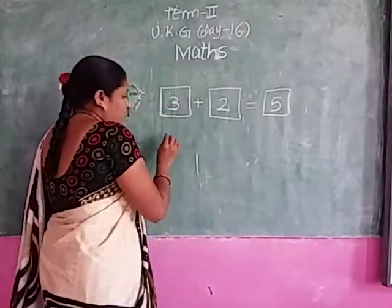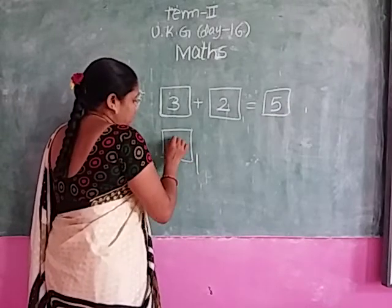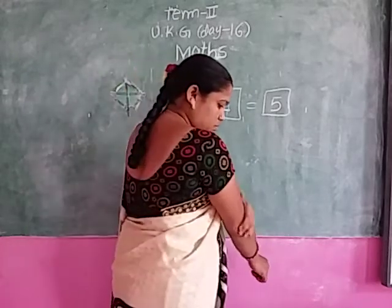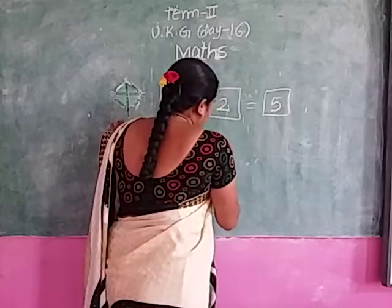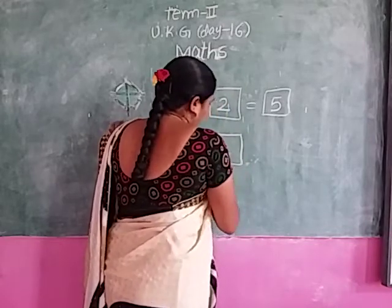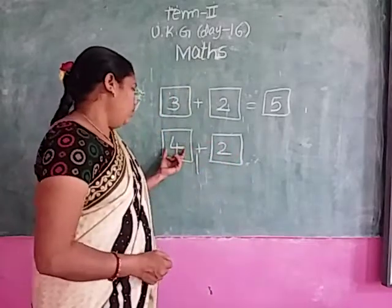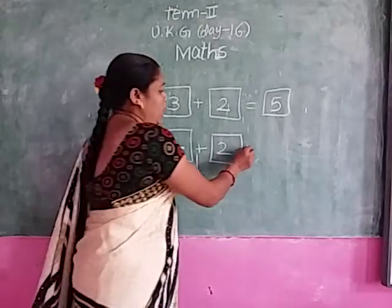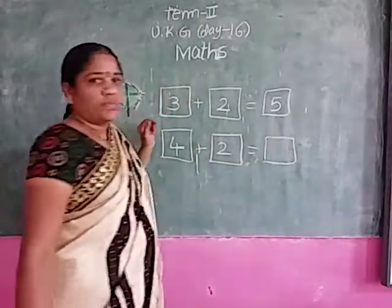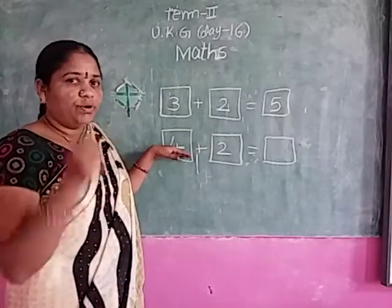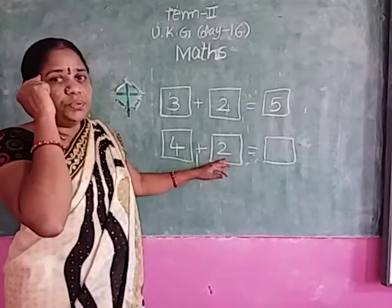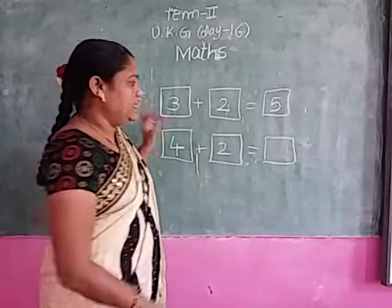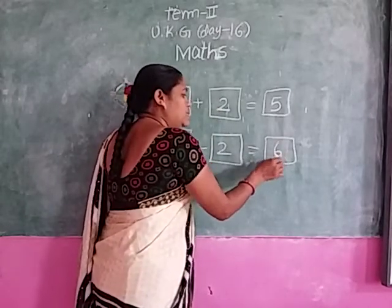I have 4 balloons. Jan gives me 2 more balloons. I have 4 balloons, Jan gives 2 more. Now altogether, how many are there? Which is the greater number? 4. Keep 4 in your mind. Which is the smaller number? 2. Open 2 fingers. After 4: 5, 6. What is the answer? 4 plus 2 equals 6.